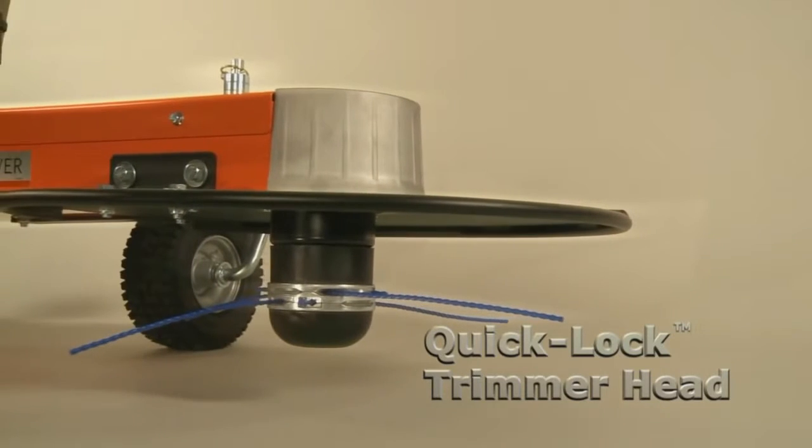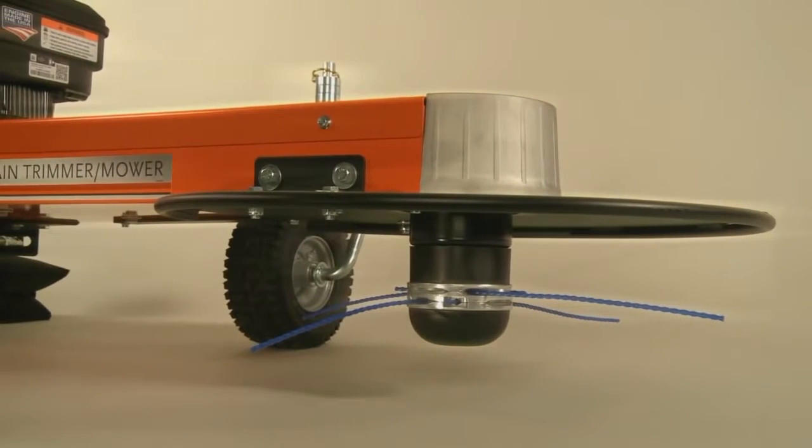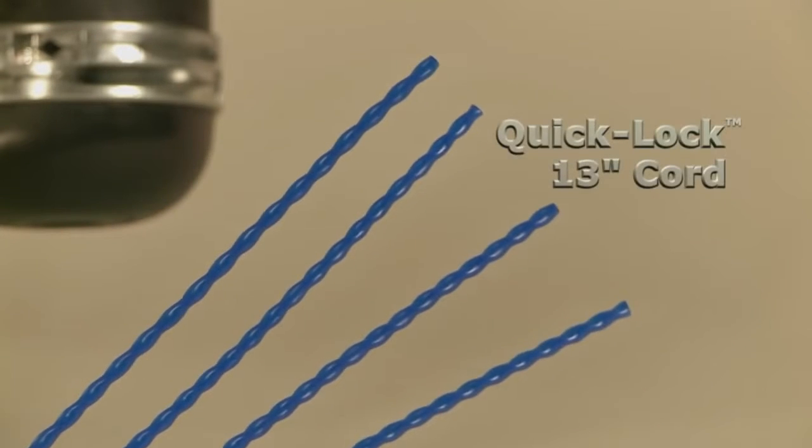The QuickLock trimmer head is designed especially for rough area trimming and mowing. The QuickLock uses four pieces of DR cutting cord cut to a 13 inch length.